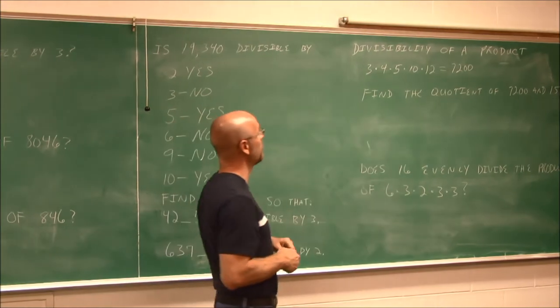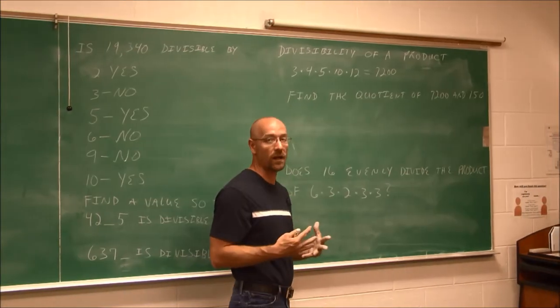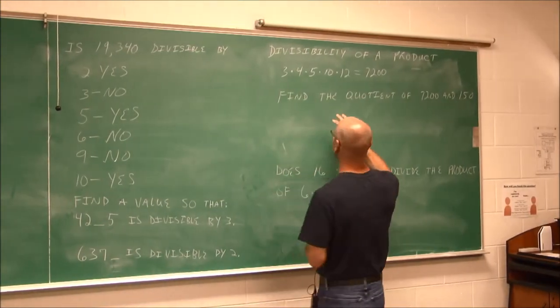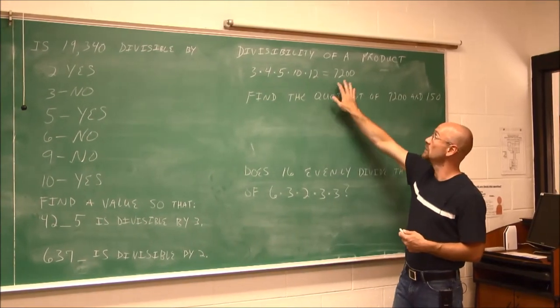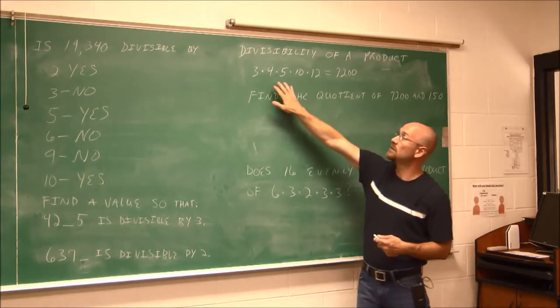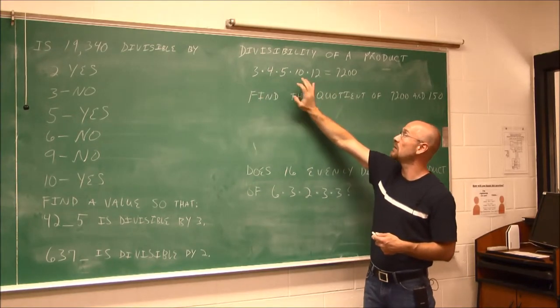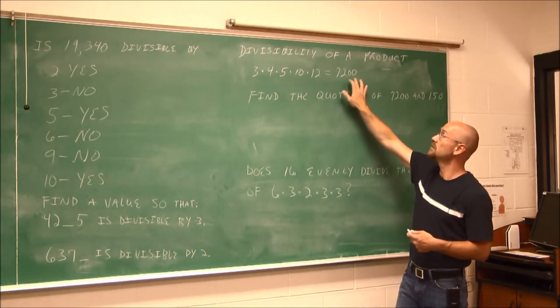All right. Let's look at divisibility of a product. And if we recall product, that terminology just means these multiplied together. Product means multiplication would give us this. So we're given this information: 3 times 4 times 5 times 10 times 12 is 7,200.